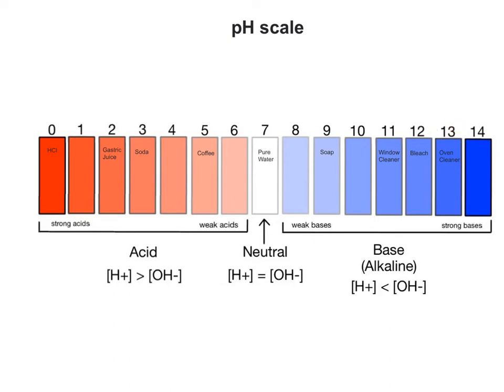A solution with a pH equal to 7, such as pure water, is neutral. Its concentration of hydrogen ions is equal to its concentration of hydroxide ions. The pH scale is a logarithmic scale based on the power of 10.